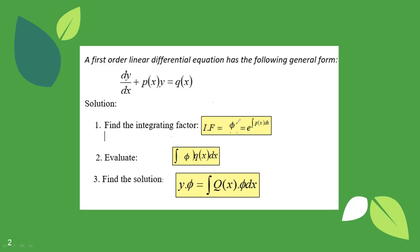That is your phi. The second part: you evaluate the integral of the product of Q of x and phi. Some students don't perform this separately — after determining the integrating factor, they go straight to the formula. This is the formula of the solution of your linear first order DE. On the left side you have your unknown function multiplied to the integrating factor. The right side is the integral of the product of your Q of x and your predetermined integrating factor.